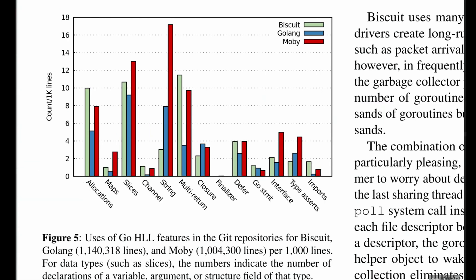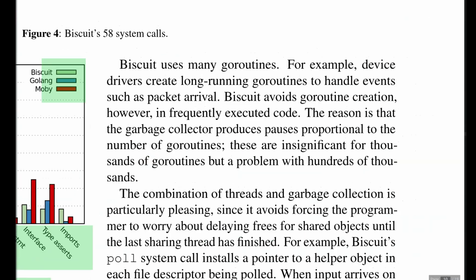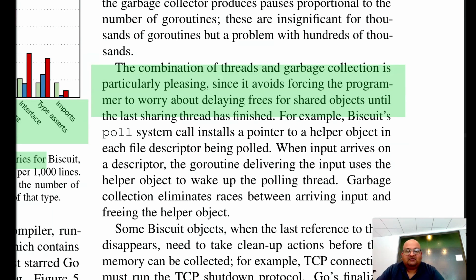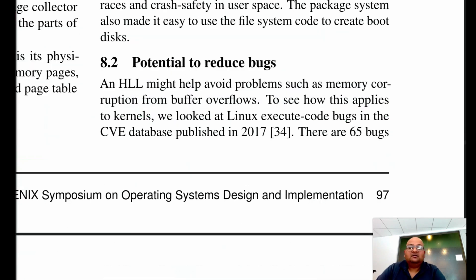Biscuit makes good use of a lot of the high-level features that the Go language provides. The authors compare it with a couple of other very popular Go projects — the Go language itself as well as Moby, which is a part of Docker — and find that Biscuit uses about the same number of Go's high-level features. Go routines help with drivers using long-running event handlers. Using threads with garbage collection really frees the programmers from a lot of cognitive overhead because they don't have to worry about when shared objects are being used by concurrent threads. Perhaps the biggest gain is the potential to reduce bugs such as memory corruption and buffer overflows.